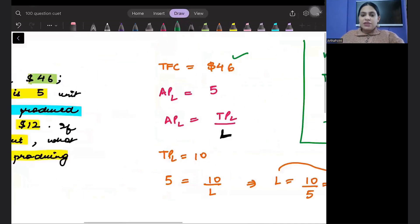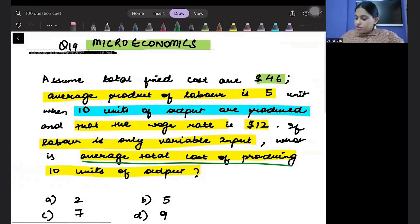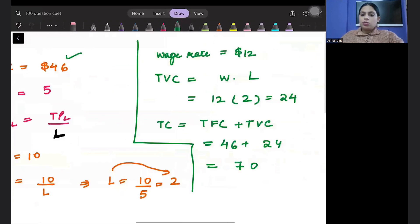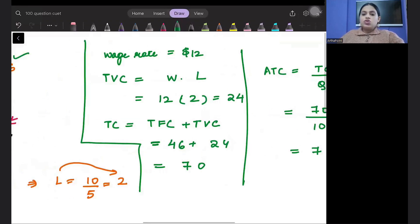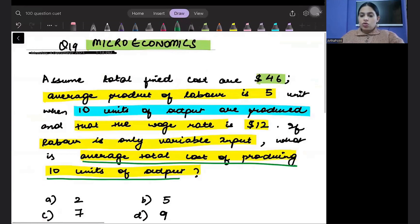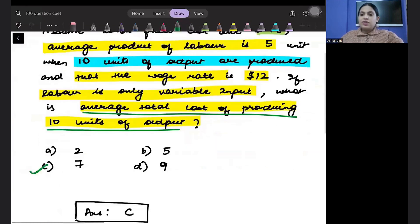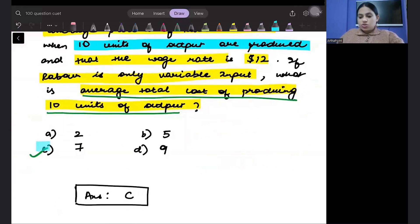What do we want to find out? What is the average total cost of producing 10 units of output? We need to find out ATC. What will be average total cost? Total cost divided by number of units of output. 70 divided by 10, which is 7. So my average total cost will come out as 7. So the correct answer to this question will be C.